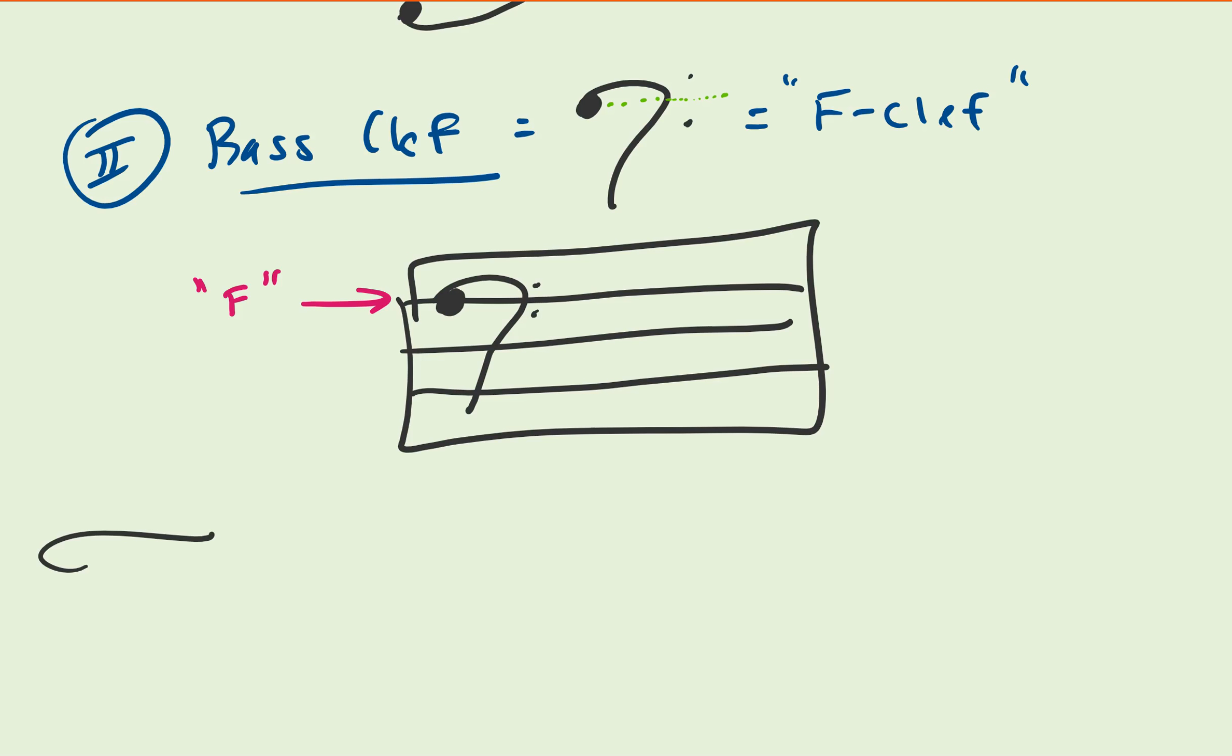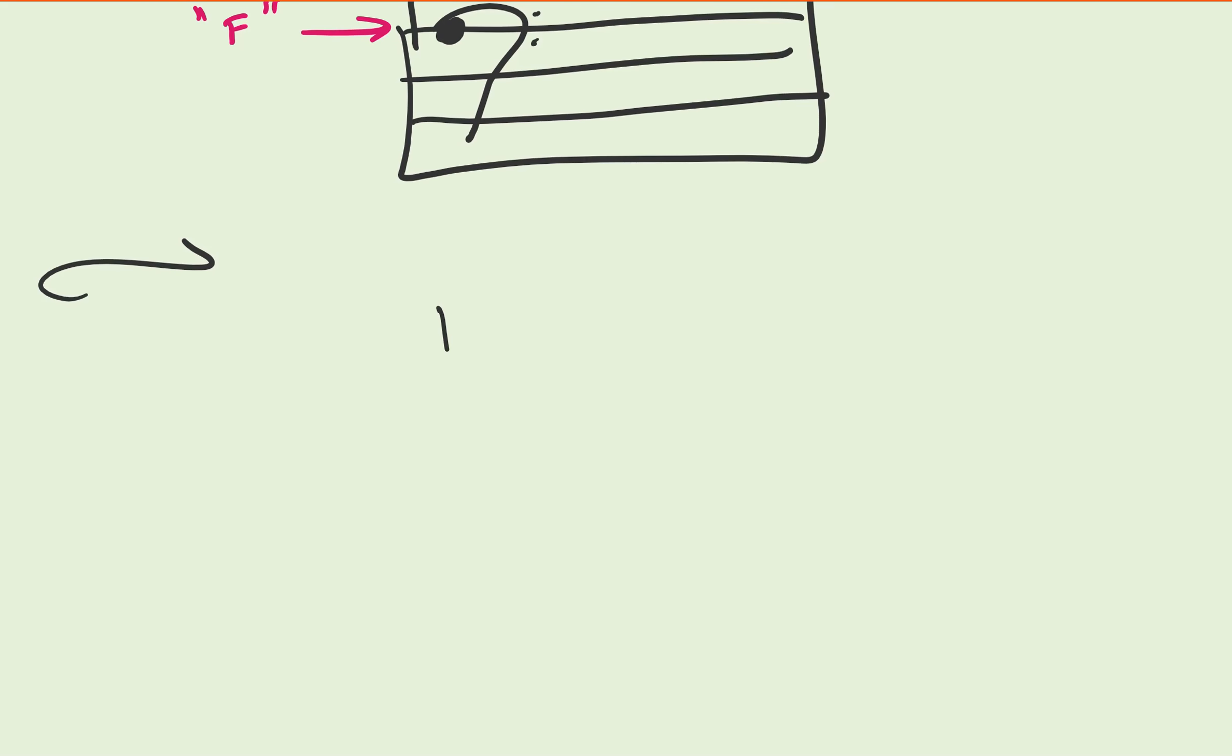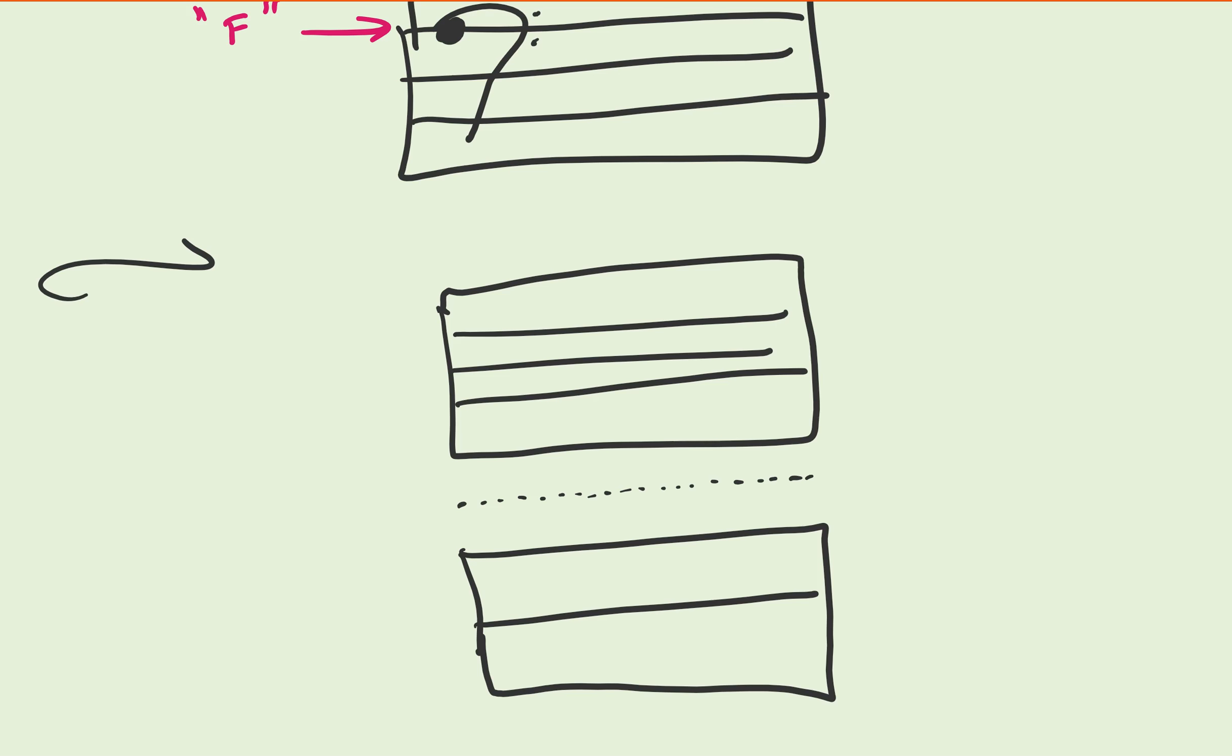To combine these two, what we do is this. Consider two staffs, plural staves, that are separated evenly about this dotted line. Conventionally, the bass clef is drawn on the bottom staff. The treble clef is drawn about the top one by convention. Treble clef on top, bass clef on bottom.